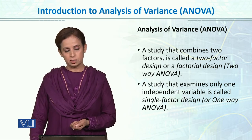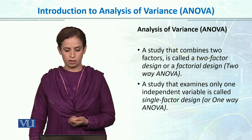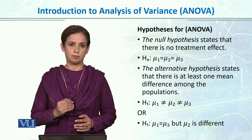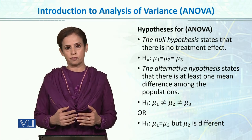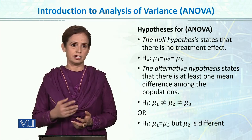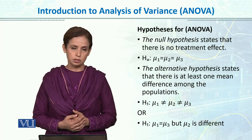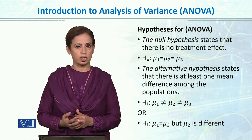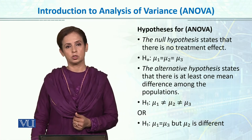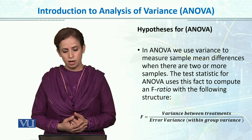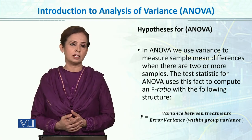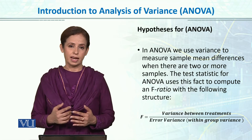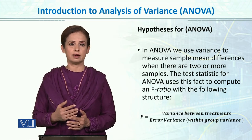A study examining only one independent variable is called a single-factor design or one-way ANOVA. In ANOVA hypothesis testing, the null hypothesis is that all group means are equal — for example, μ1 = μ2 = μ3 — meaning there is no difference between groups. The alternative hypothesis is that at least one group is different from the others. In ANOVA, we use variance to measure sample mean differences, rather than directly subtracting means as in t-test.